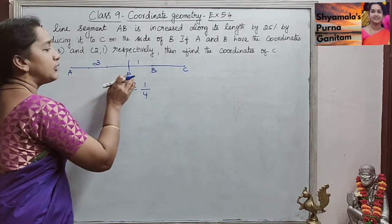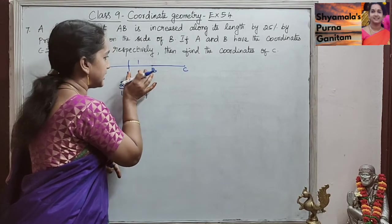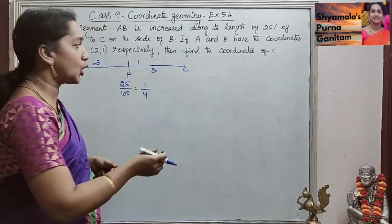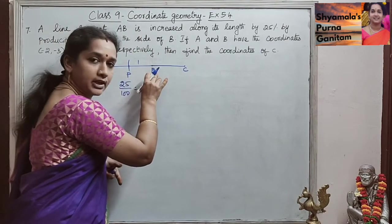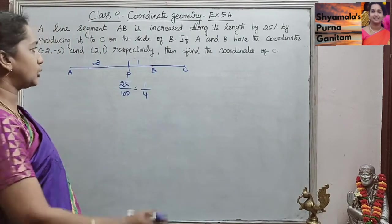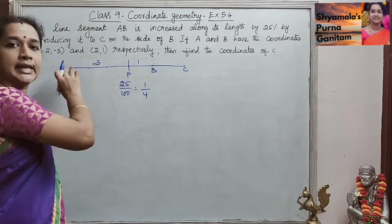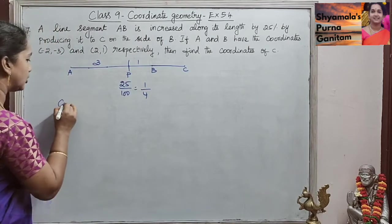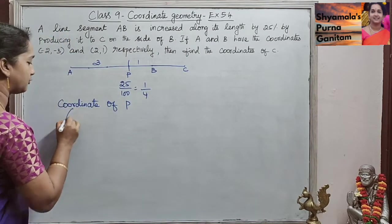So we got the ratio for this line segment. We will find the coordinate point of P. Then, since the same part they are increasing means B will be the midpoint. So we already have the coordinate point of B. We will find P using the section formula first, since the ratio is 3 is to 1 and the A and B coordinates are given.